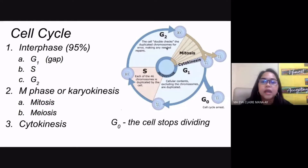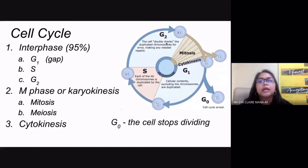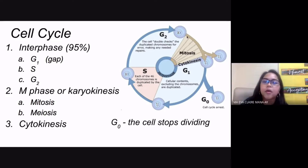The last part of interphase is G2. During G2, the cell double-checks whether the chromosomes that were duplicated have any errors, aberrations, or mutations, and repairs may be needed. G2 is then the preparation of the cell for the M phase, which is your karyokinesis.